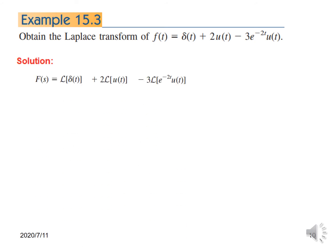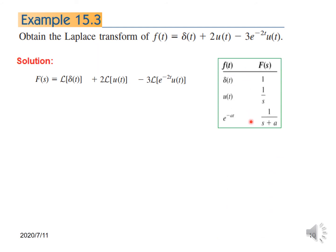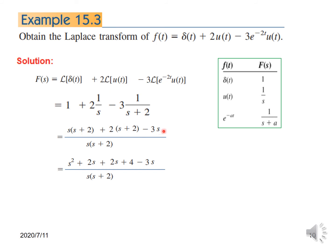We can write the terms separately: F(s) is the Laplace of δ(t) plus 2 times the Laplace of u(t) minus 3 times the Laplace of e^(−2t)u(t). Using the table: Laplace of δ(t) is 1, Laplace of u(t) is 1/s, and Laplace of e^(−at) is 1/(s+a). Here a = 2, so we plug in 2. Taking the LCM and simplifying gives the final answer for example 15.3.